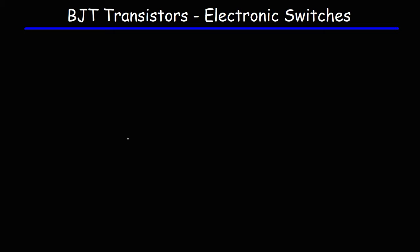In this video, we're going to focus on BJT transistors and how they act as electronic switches. But let's start with the basics. This is the symbol of an NPN transistor. My drawing is not perfect, but we'll make the best of it. This is the base, here we have the collector, and that is the emitter of the NPN transistor.